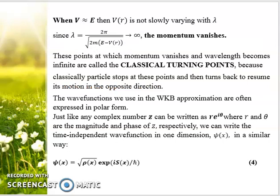Now comes the special case when E equals V. In this case, V(r) is not slowly varying with λ. Since λ = 2π/√(momentum), and the momentum vanishes because E - V(r) equals zero, this is the particular case where momentum vanishes and wavelength becomes infinite.